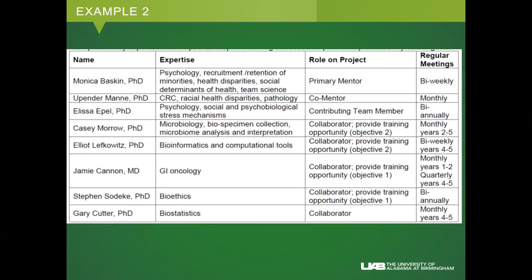The question is about how much overlap there should be with your mentor's research. For a K99/R00, the first couple of years are the K phase, and then you transition to more of a mini R01. You've got to show some independence from your primary mentor, but you still want that person to help you figure out how to navigate. That K is there to help you get to the next step.